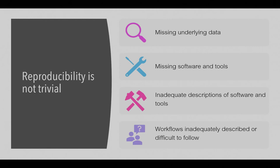Workflows in terms of the overarching process for running the code were also inadequately described or difficult to follow. One team's paper had 80 different scripts with no description of what each script was supposed to do, how they were supposed to work together, or what part of the analysis each covered. They also didn't indicate which particular dataset was the input for which script. So while the researchers had made a lot of information available, in practice it was not really usable at all.